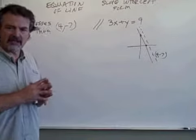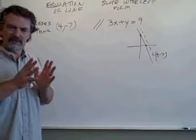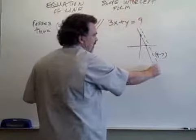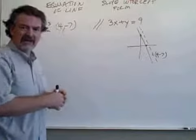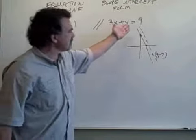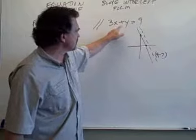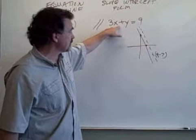Now, what do we know about parallel lines? Well, parallel lines never cross. The only way that can happen is they have to have the same slope. So whatever the slope is of this line, which is associated with this equation,